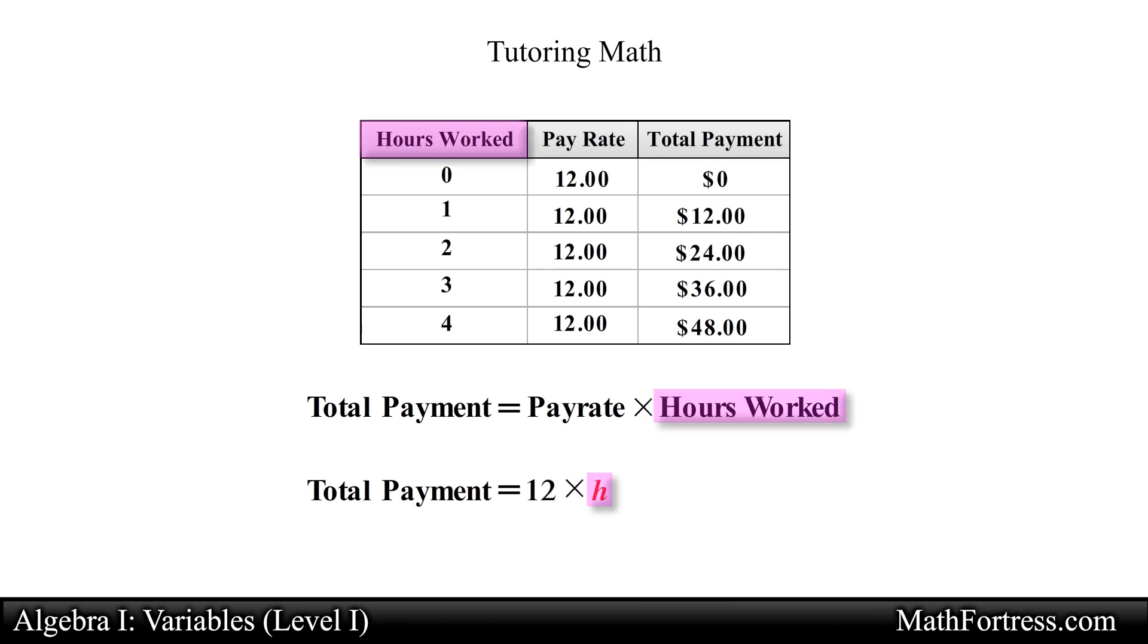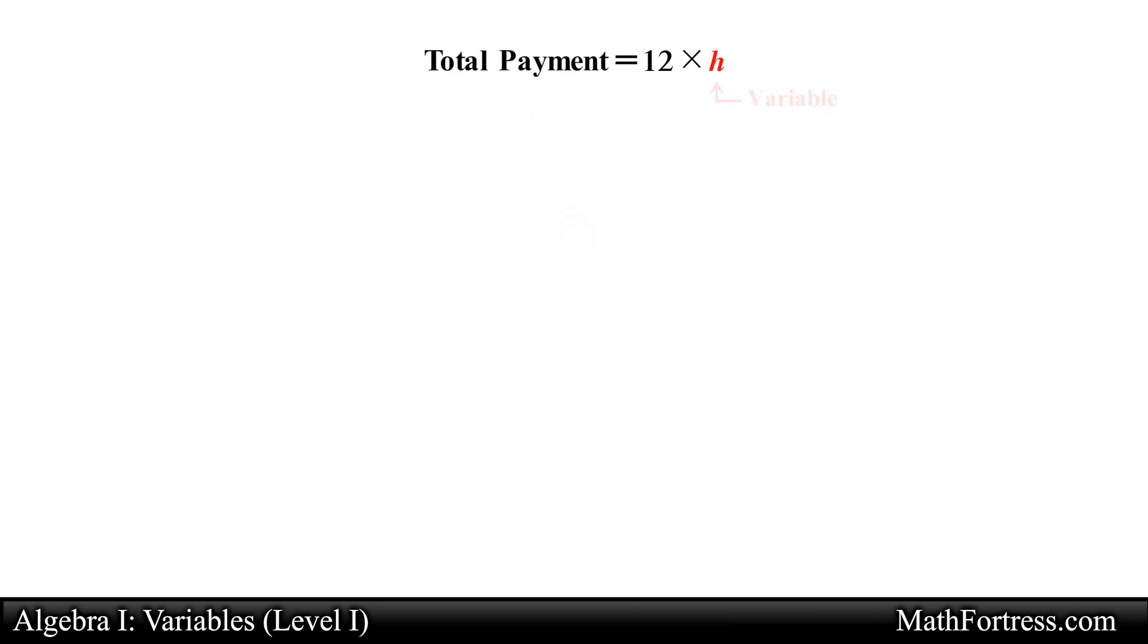The letter H stands for the hours shown in the first column of the table. In addition, H can stand for other hours not in the table, like 5, 6 and even 80 hours. In algebra, we call the letter H a variable.